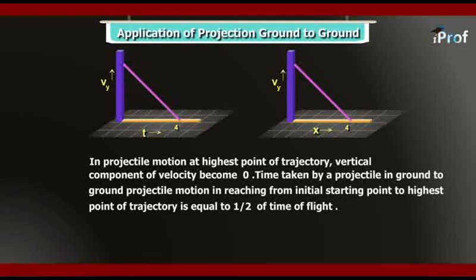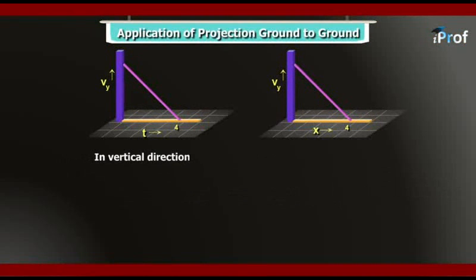The total time of flight of ground-to-ground projectile motion is u·sinθ / g. So the time taken to reach the highest point is u·sinθ / g, which equals 4 — because at 4 seconds the vertical component of velocity becomes 0. Looking at the other graph, at the position of 4 meters the vertical component of velocity is also 0, meaning 4 meters equals half of the range of the projectile. So we write: u·sinθ / g = 4.